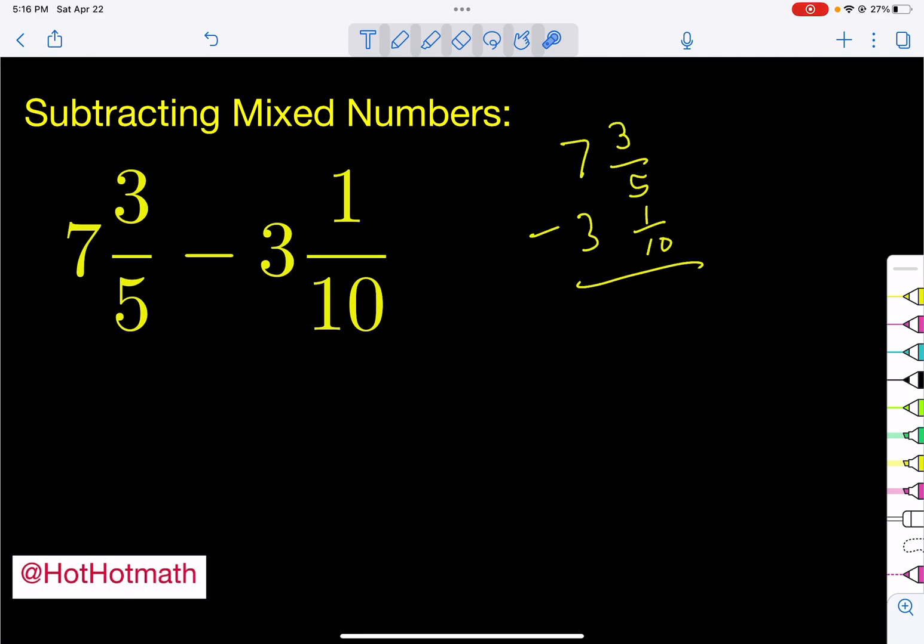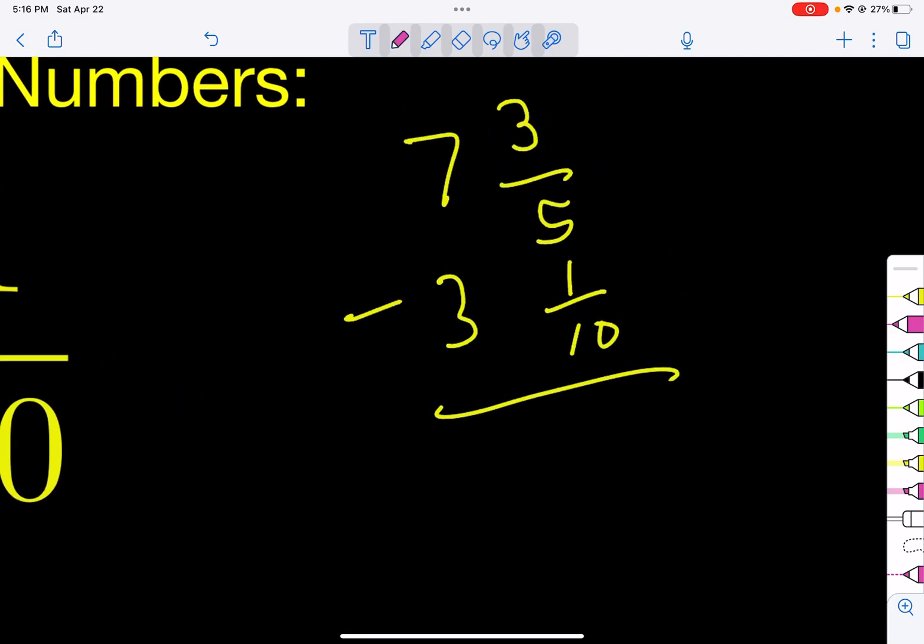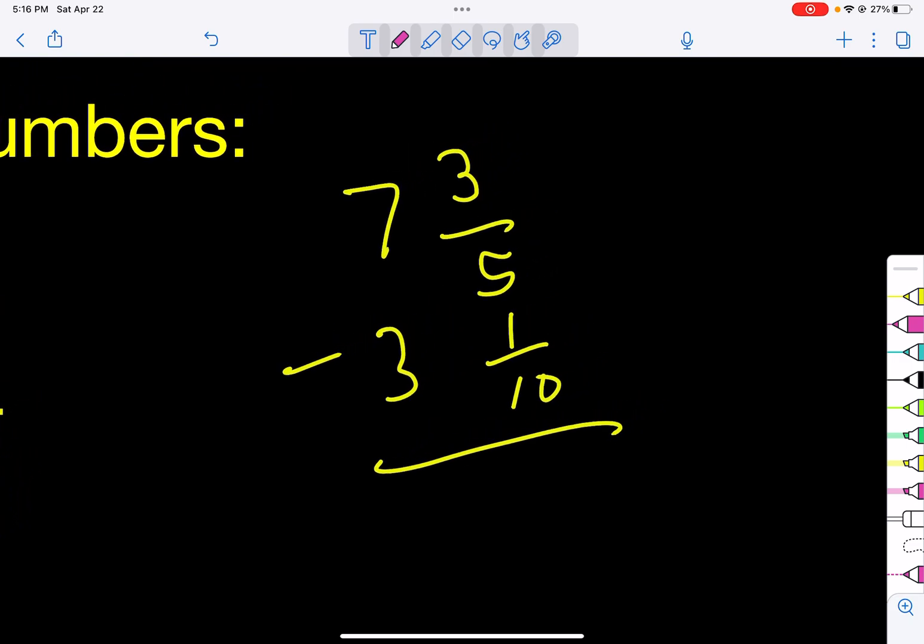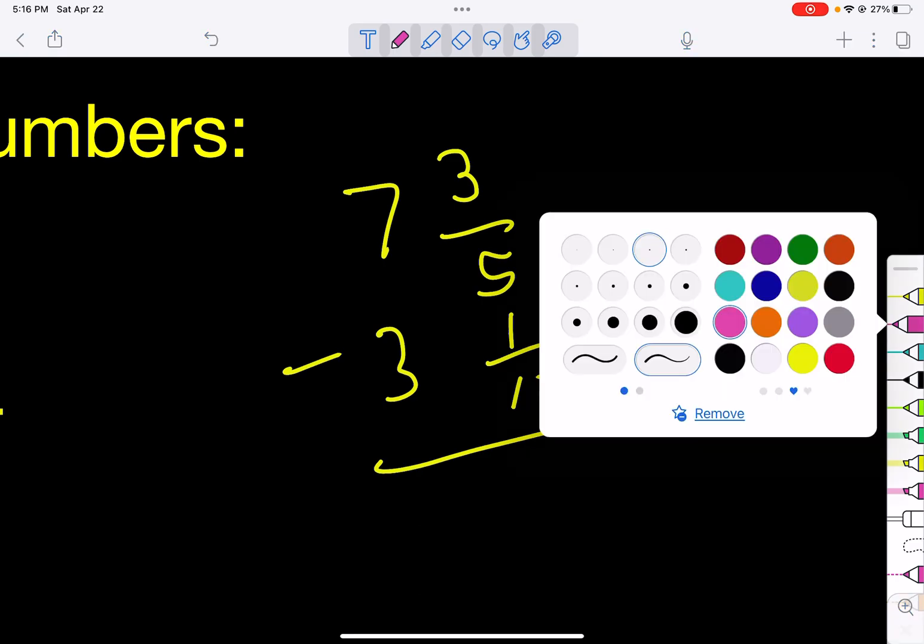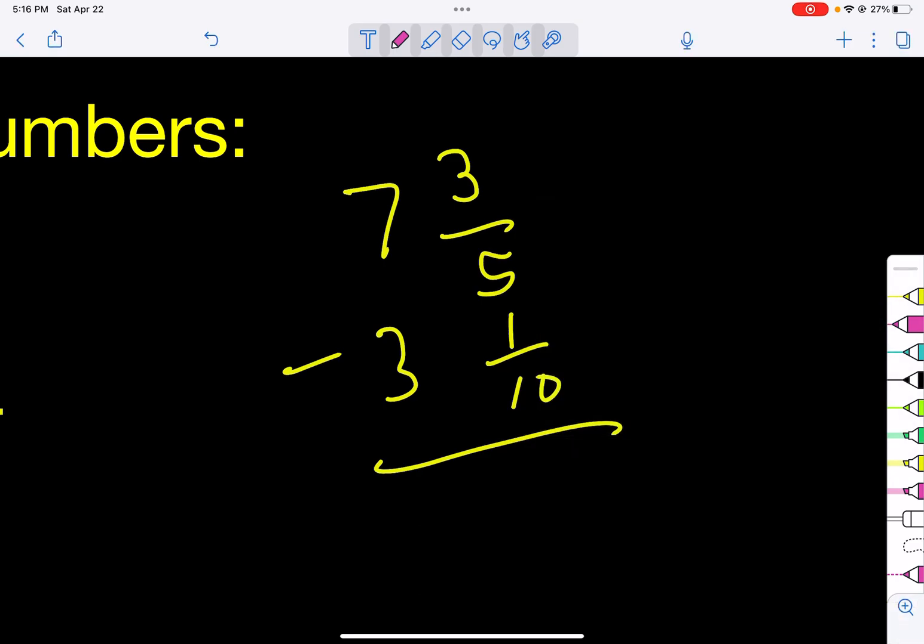So you have to think to yourself, okay, what could both 5 and 10 go into? Well, the least common multiple of 5 and 10 is 10. Since 5 already goes into 10 and that sometimes will happen, you'll have the smaller number will divide into the other number. Go ahead and use that bigger number.